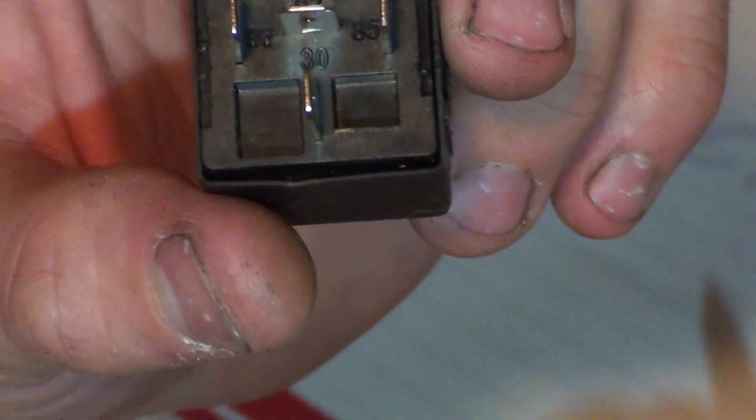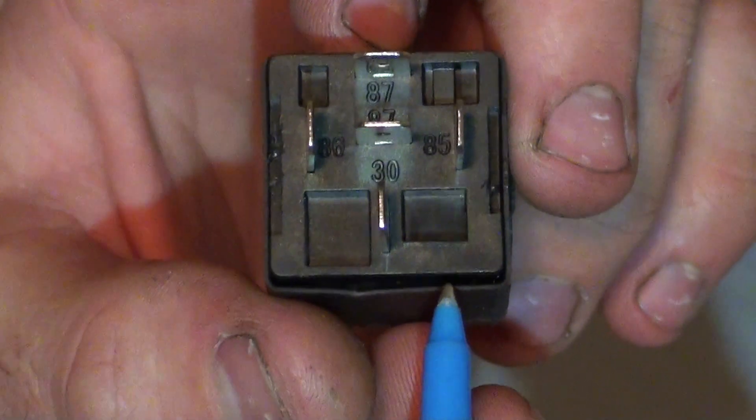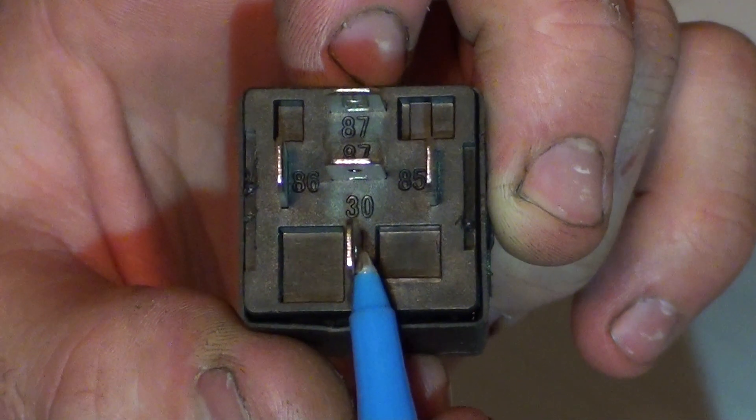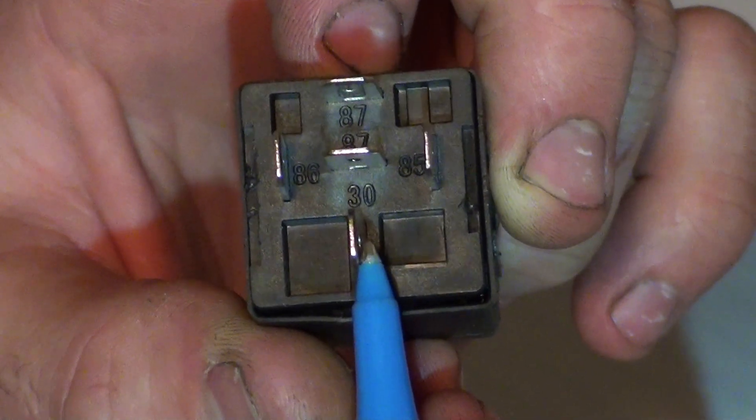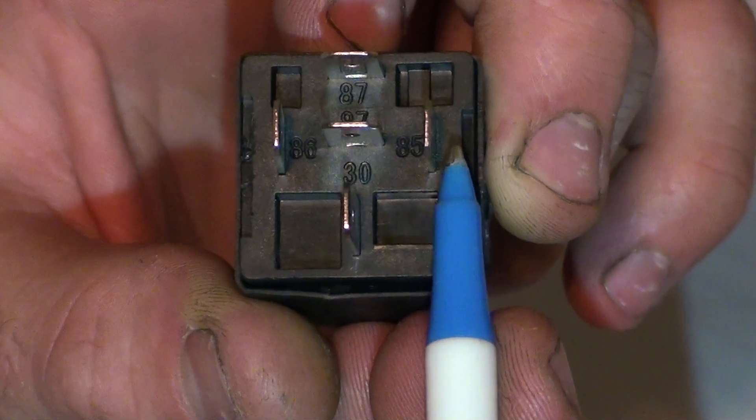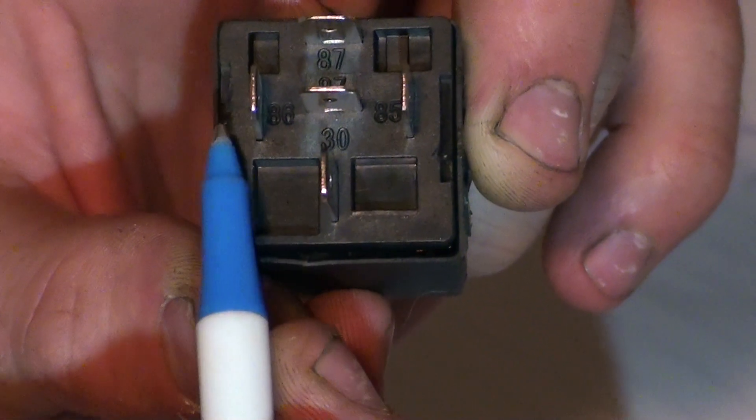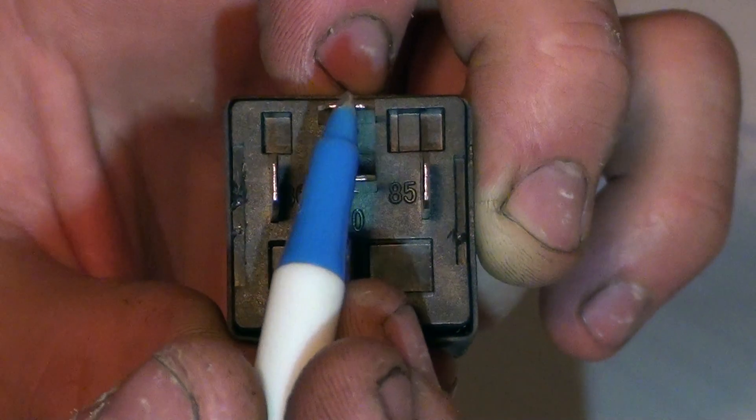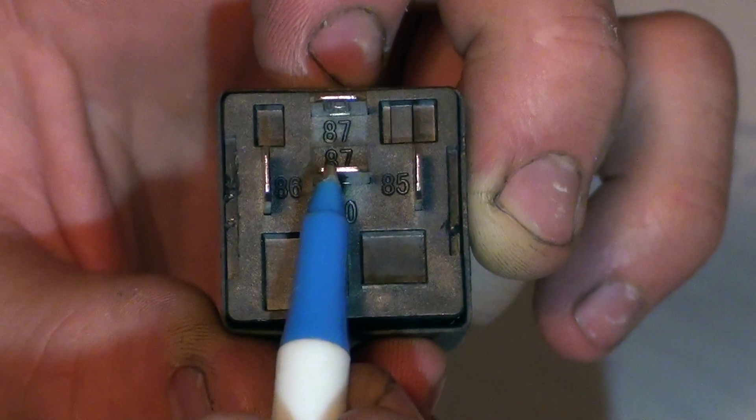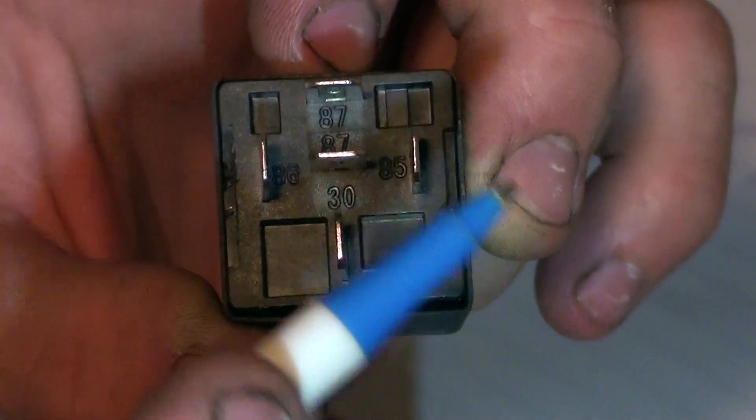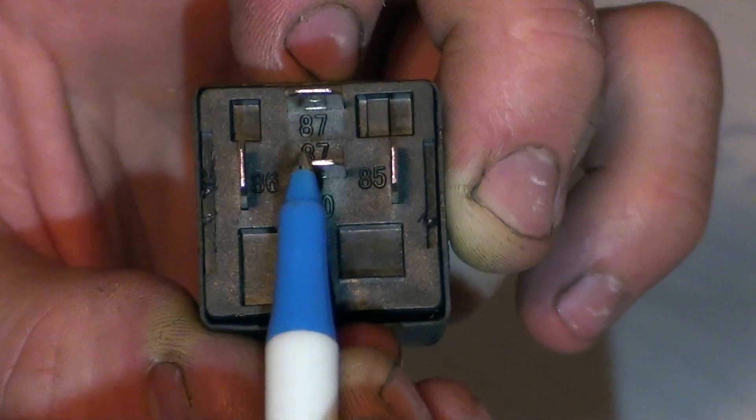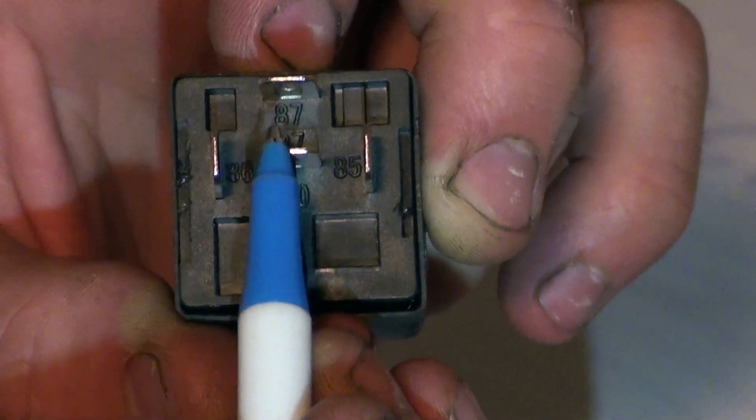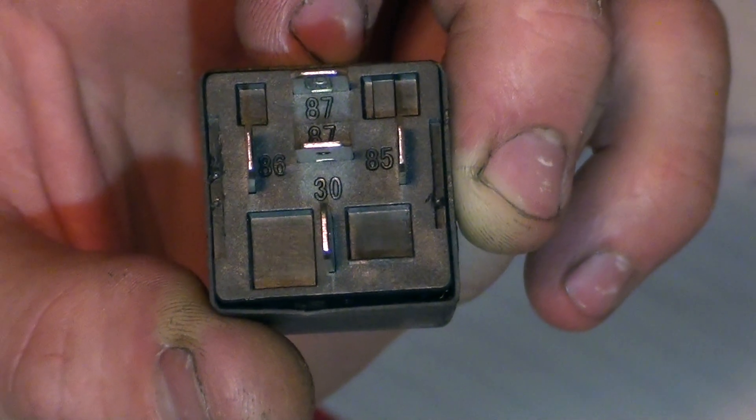So on the bottom of the relay, we have on this one five different terminals. Terminal 30 is always main battery power supply. So that will be your battery supply from the positive on your 12 volt battery in your car. 85 will always be the earth for the coil, which is the switching side of things. 86 will always be the power supply to the coil for the switching side. 87, and this one's also 87, will be where you connect the power supply for your lights. So say you have some LED lights, you'll connect the power supply to one for your left-hand one, and then power supply for your right-hand one to this one, and then earth the lights to the body of the car, or back to the battery.